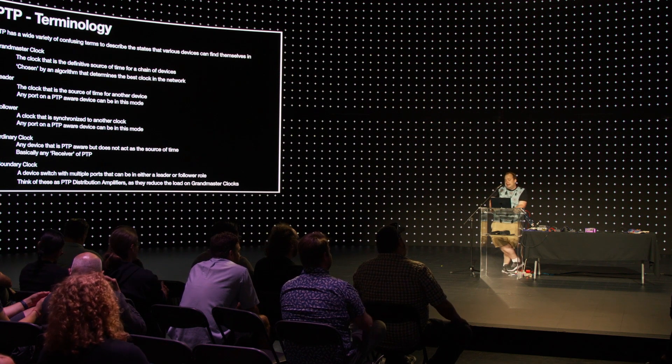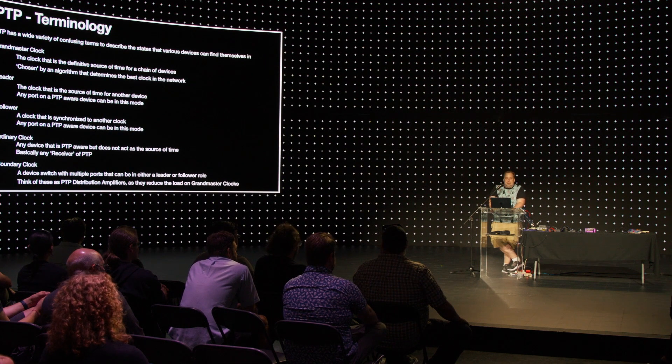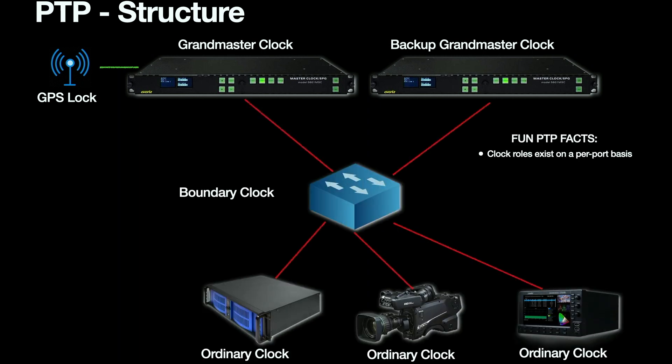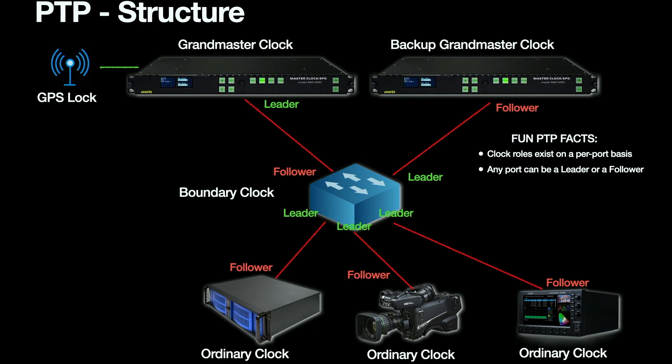The boundary clock is a device like a switch with multiple ports that can be either leader or follower — basically PTP distribution amplifiers. They reduce the load on the grandmaster clock because every device is sending packets and doing calculations. Generally you want two GM clocks — a primary and a backup — going into a switch, which is your boundary clock, which then distributes time to other devices. Devices at the bottom don't constantly hammer the upper clocks asking 'what time is it?' This is important in a data center where you have thousands of machines.